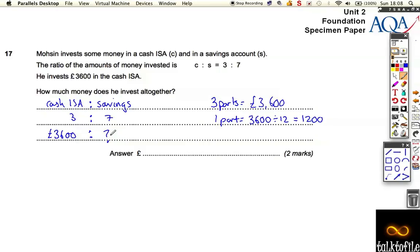Add that to the £3600 and that gives the total. Or I can spot that I could find all 10 parts together in one go to get the total directly.